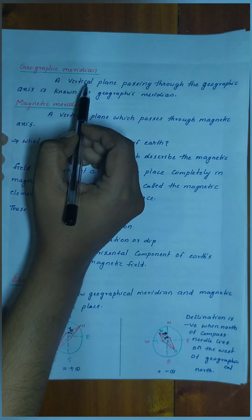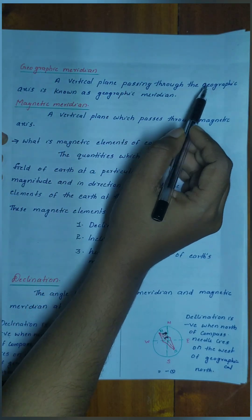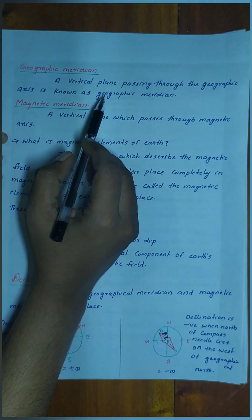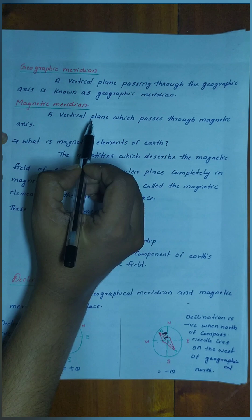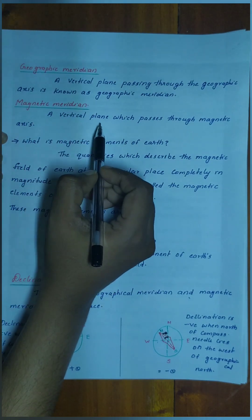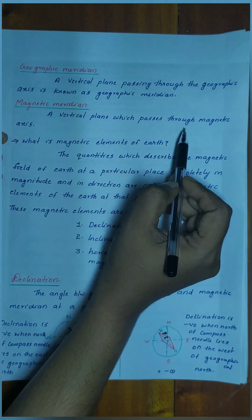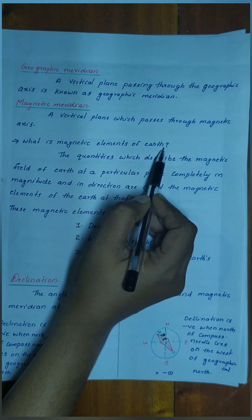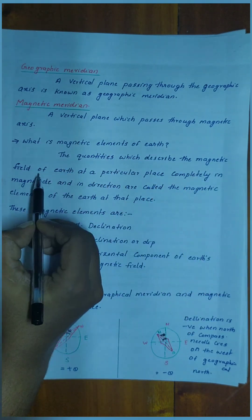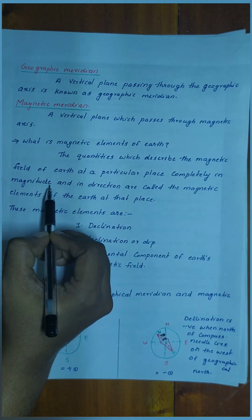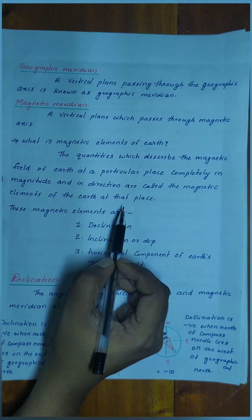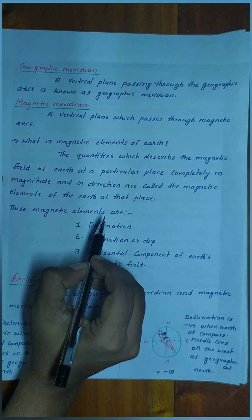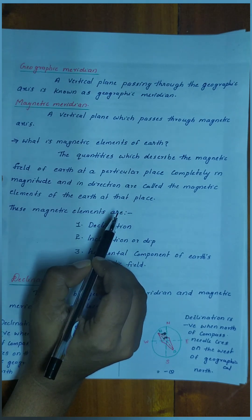Geographic meridian is a vertical plane passing through the geographic axis. Similarly, magnetic meridian is a vertical plane which passes through the magnetic axis. The quantities which describe the magnetic field of the earth at a particular place completely in magnitude and direction are called magnetic elements.